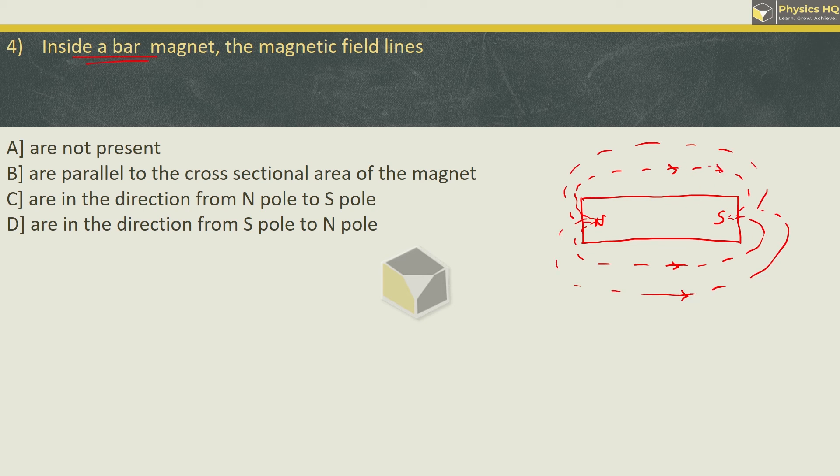Inside the bar magnet, when these lines of force come in, they travel in this direction from south pole to north pole. So the correct option is option D, in the direction from south pole to north pole. Hope you all understood this.